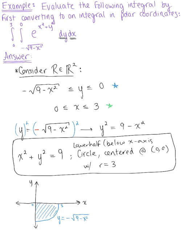Since we want to convert to polar coordinates, the bounds on r are: r is greater than or equal to 0, less than or equal to 3. For the bounds on theta — working in quadrant 4 — theta goes from 3π/2 to 2π. So theta is greater than or equal to 3π/2, less than or equal to 2π.